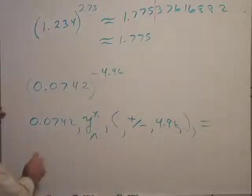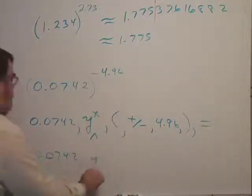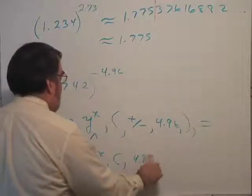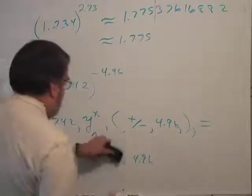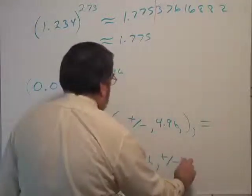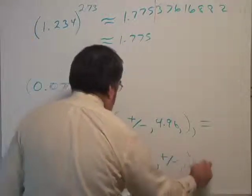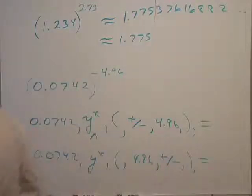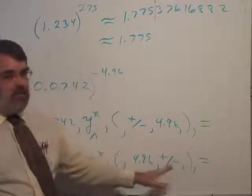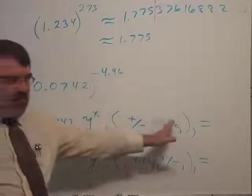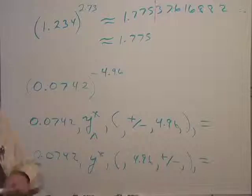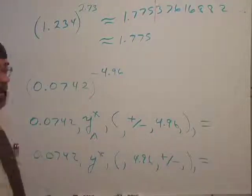Now, on some calculators, it would look like this. Instead, you have to punch in 4.96 and then change the sign to a negative. So you're just going to have to experiment and learn what kind of calculator you have. Usually, the older or less sophisticated calculators do it in this order. And the more sophisticated, newer, more expensive, or graphing calculators, you put the negative followed by the number. But whatever the case, learn what kind of calculator you have.